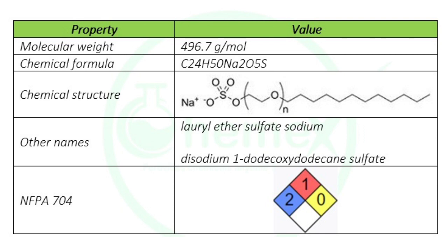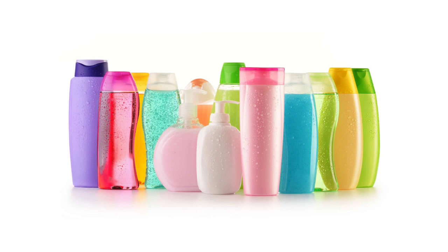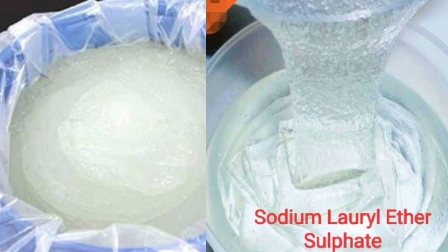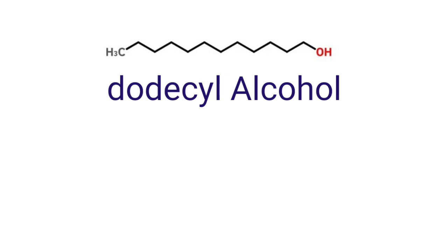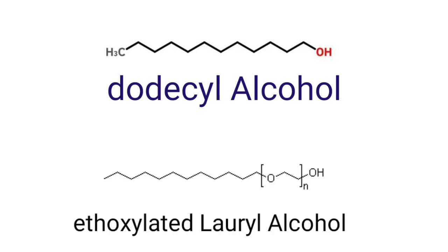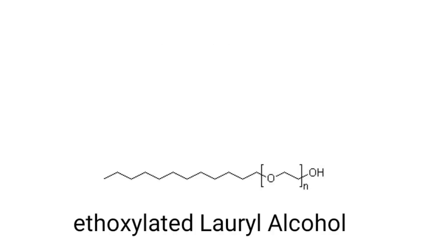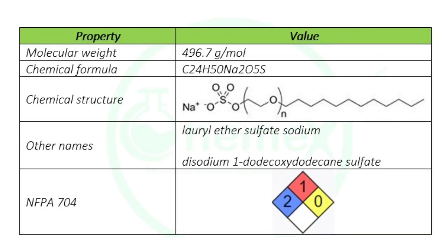Sodium lauryl ether sulfate is a detergent and anionic surfactant with excellent performance, used in personal care products. As SLES is an effective foaming agent, it appears as a white to yellow paste. It is prepared by a thorough solution to dissolve alcohol, followed by sulfonation and neutralization with sodium salt, like other fatty alcohol sulfates and fatty alcohol ether sulfates.